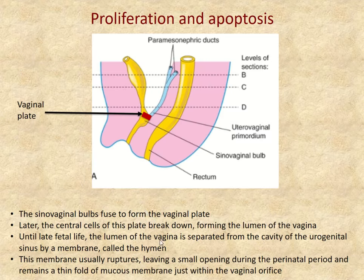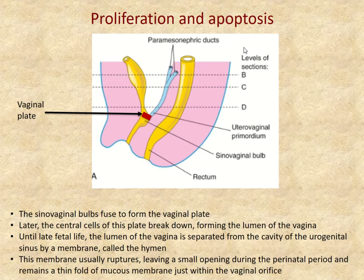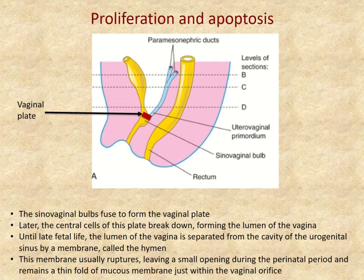There is proliferation that closes off the opening — the vaginal plate — which is supposed to break down through apoptosis, resulting in a lumen in the vagina. For a long time, the actual lumen of the vagina is separated from the urogenital sinus by a membrane called the hymen. It usually ruptures and has a small opening at birth, but sometimes it doesn't, and so the hymen is a remnant structure that can be examined clinically.